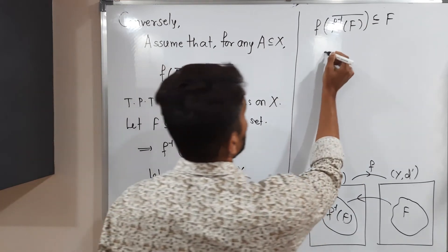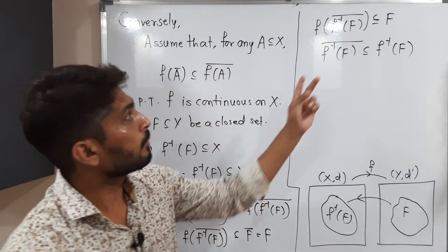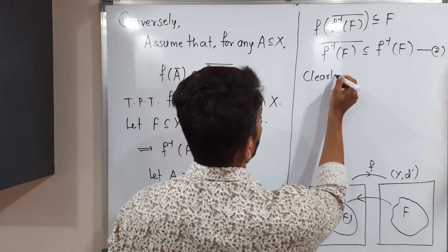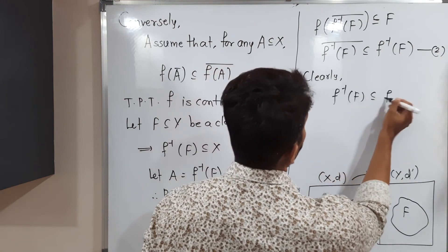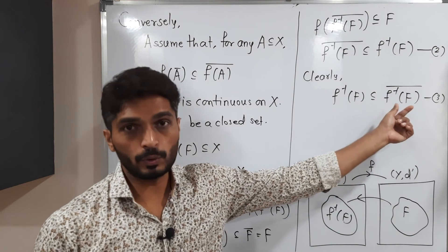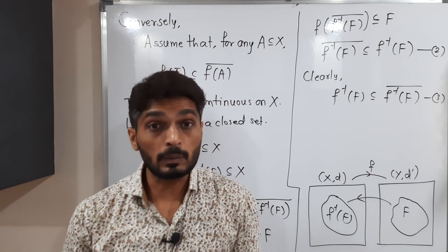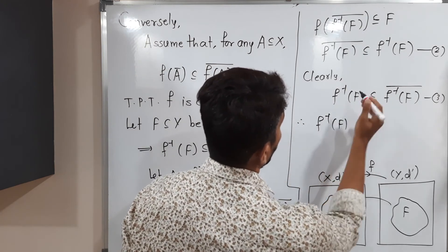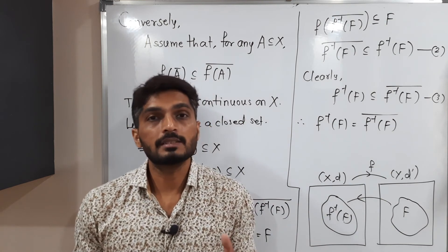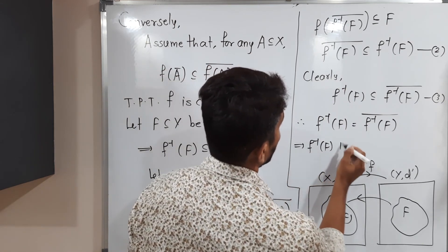Now, shifting f to the other side gives f⁻¹, so f⁻¹(f(f⁻¹(F)̄)) ⊆ f⁻¹(F) — call this Statement 2. Also, clearly f⁻¹(F) ⊆ f⁻¹(F)̄, since any set is a subset of its closure. So we have: f⁻¹(F) ⊆ f⁻¹(F)̄ and f⁻¹(F)̄ ⊆ f⁻¹(F) from Statements 1 and 2 combined. This means the set and its closure are equal.